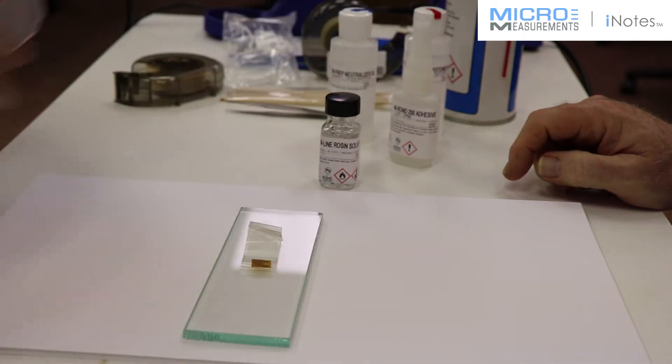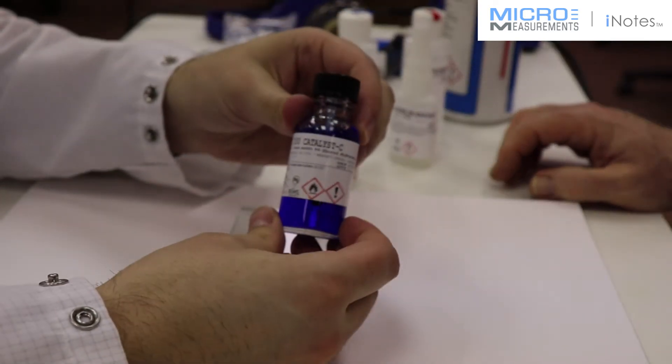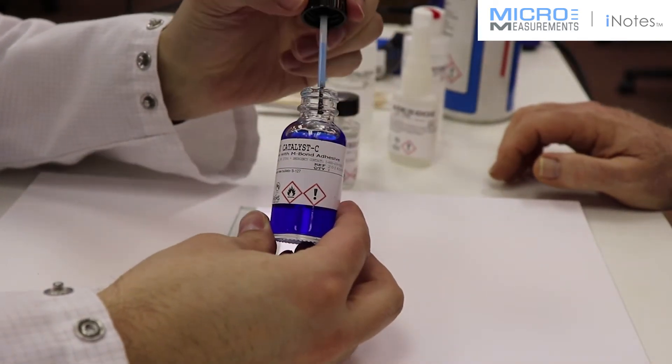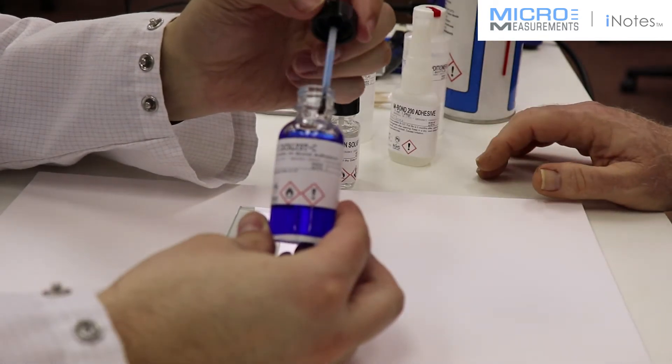He's going to tape that back. And then using the catalyst C, the blue bottle, on the inside of the neck of the bottle, he's going to knock the brush in there about eight to ten times, removing almost all of the catalyst C.